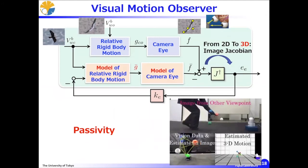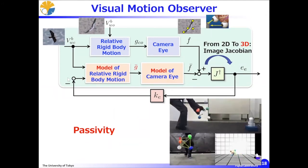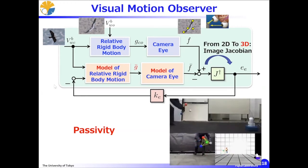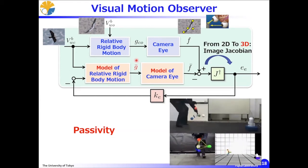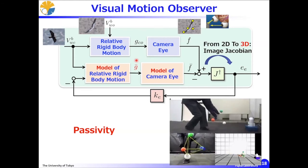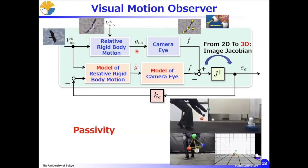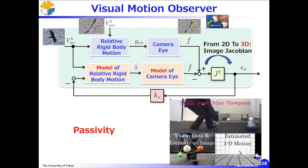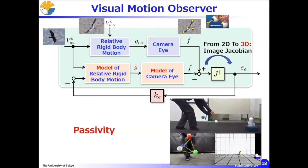Now let us close the loop of this passive system. Based on the passivity theorem, the closed-loop system becomes stable. Hence, Z-bar — the estimate of the relative rigid body motion between the camera and the target object — should converge to the true 3D rigid body motion Z_CO. This is the observer theory. Thus, we can construct the passivity-based visual motion observer. Since we now obtain real-time 3D rigid body motion information, we can use it for control, just like observer-based control.